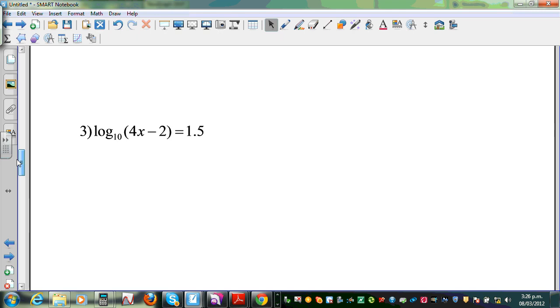Next question. Log base 10 of 4x minus 2 is equal to 1.5. So let me write the log rule. If log base b of x equals y, this is the log form. This implies b to the power y is equal to x and this is the exponential form. So let us write this in an exponential form. So can I say 4x minus 2 is nothing but 10 to the power 1.5.